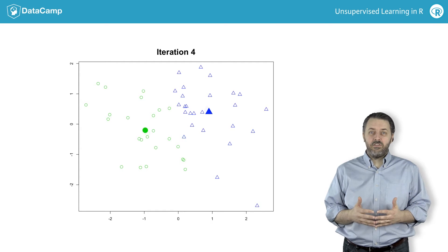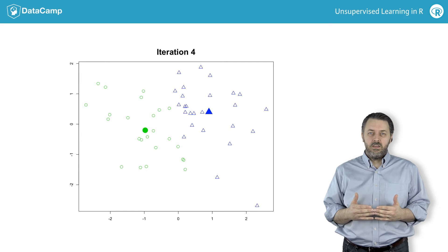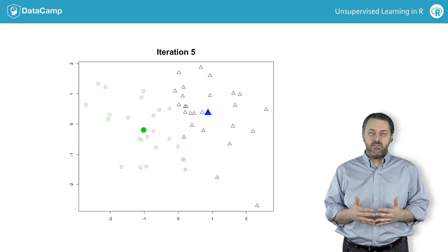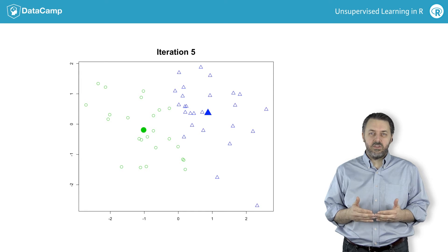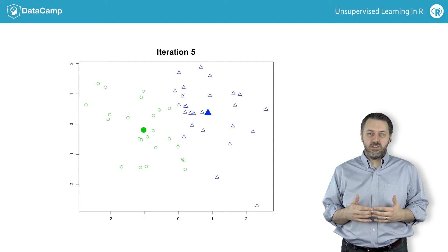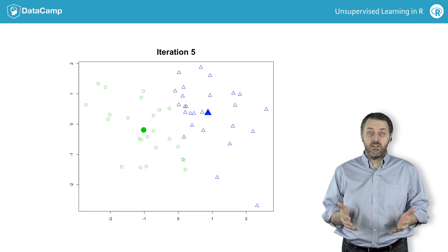This is after completion of the fourth iteration. The algorithm is completed after the fifth iteration — no observations have changed assignment from the end of the fourth to the end of this iteration, so the k-means algorithm stops. This final plot shows the cluster assignments for each observation and the cluster centers for each of the two clusters.